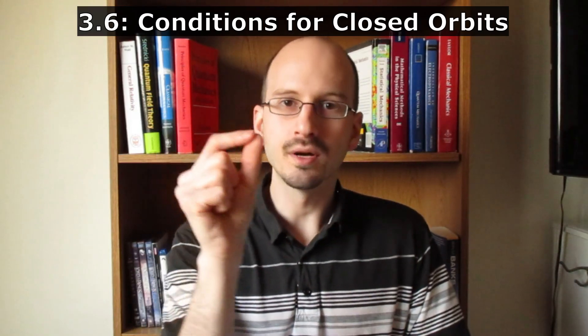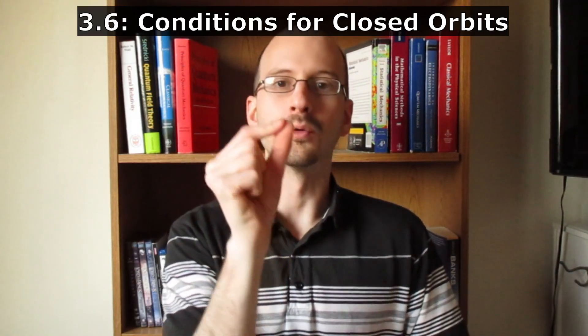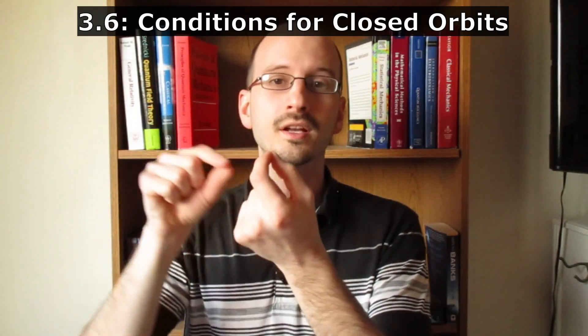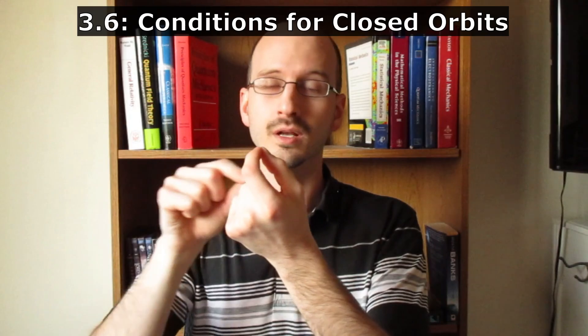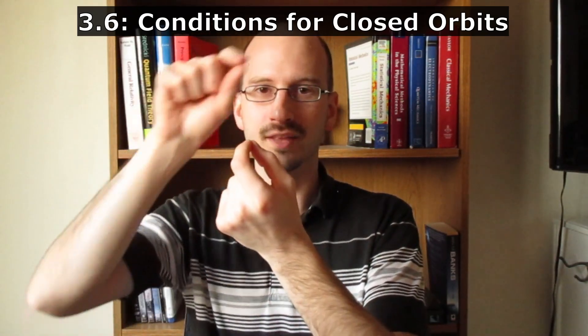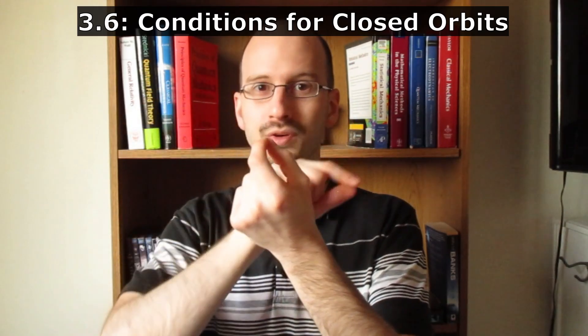So what happens if you take a stable circular orbit and you perturb it so that there's slightly more energy than that circular orbit? Well, that object is going to oscillate back and forth around the circular orbit. So the question is, does the orbit come back exactly to its original position or does it precess? Does the angle of that ellipse change with each orbit?